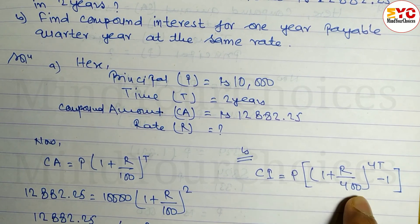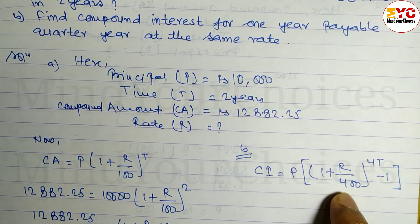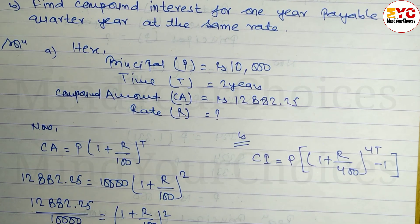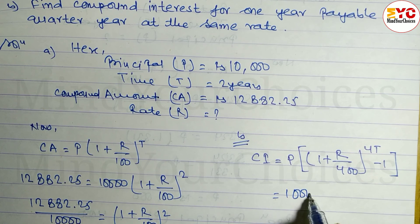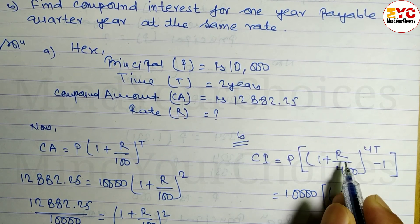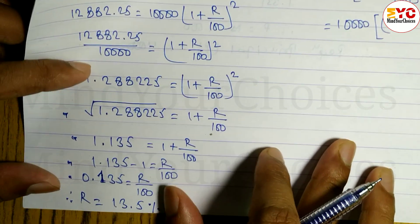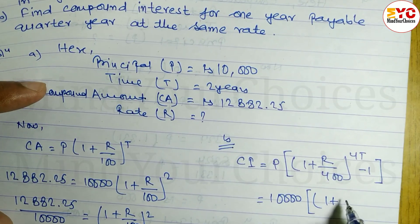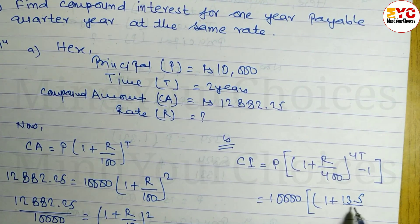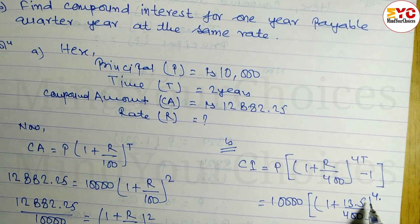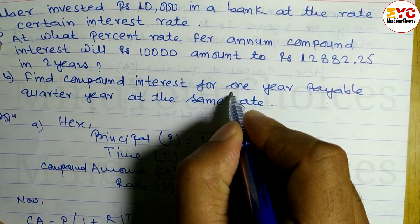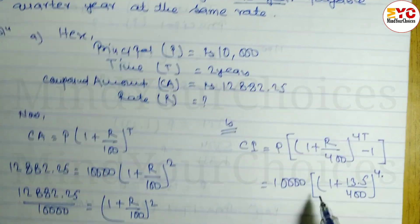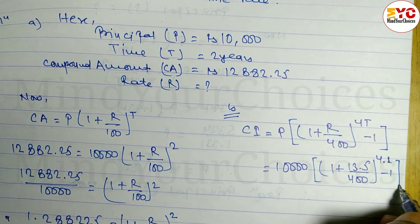Using the quarterly compound interest formula: CI equals P times (1 + r divided by 400) to the power 4t, minus 1. P is 10,000; r is 13.5; time t is 1 year, so 4t is 4. Write: 10,000 times (1 + 13.5 divided by 400) to the power 4, minus 1.